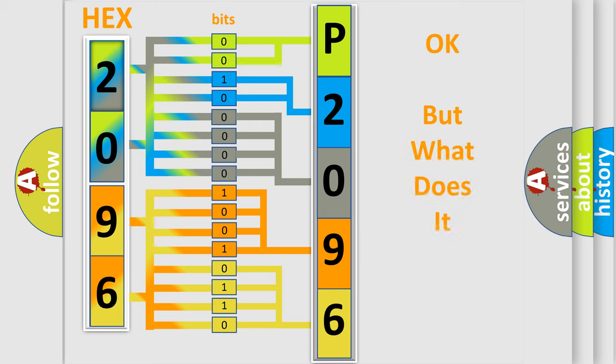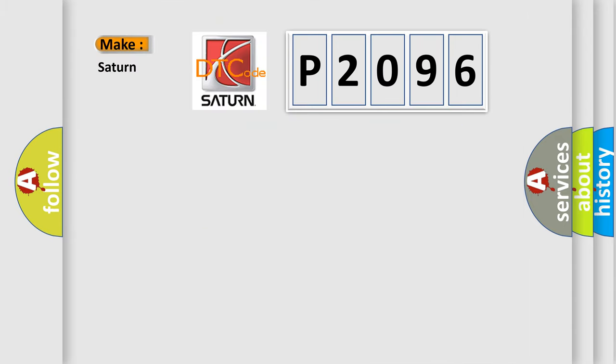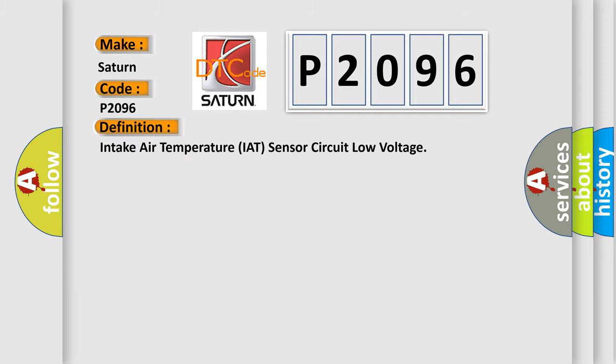The number itself does not make sense to us if we cannot assign information about what it actually expresses. So, what does the diagnostic trouble code P2096 interpret specifically for Saturn car manufacturers? The basic definition is: Intake Air Temperature (IAT) sensor circuit low voltage.